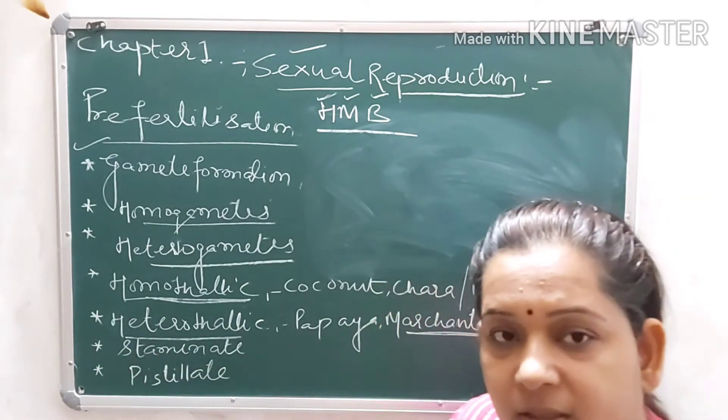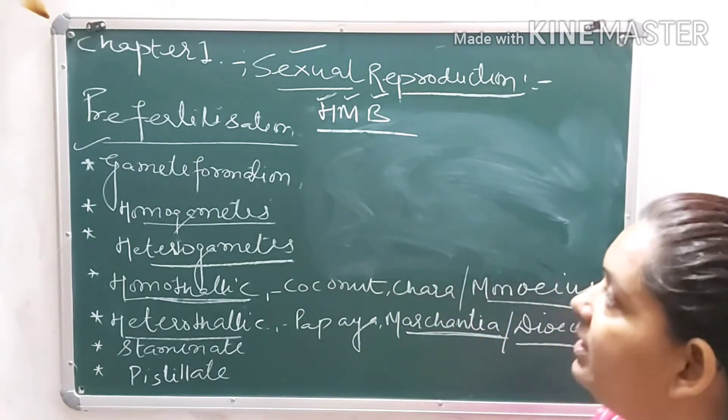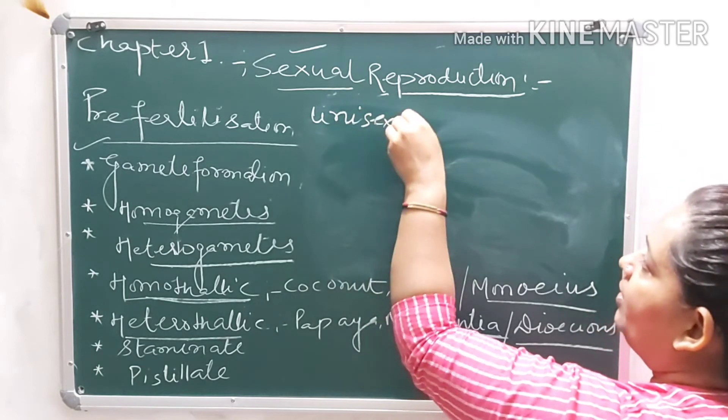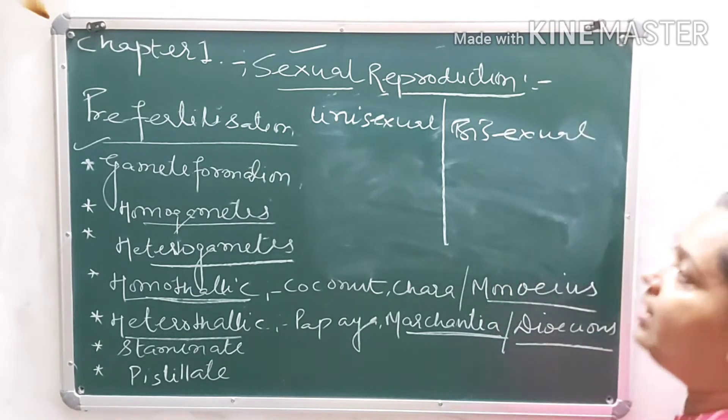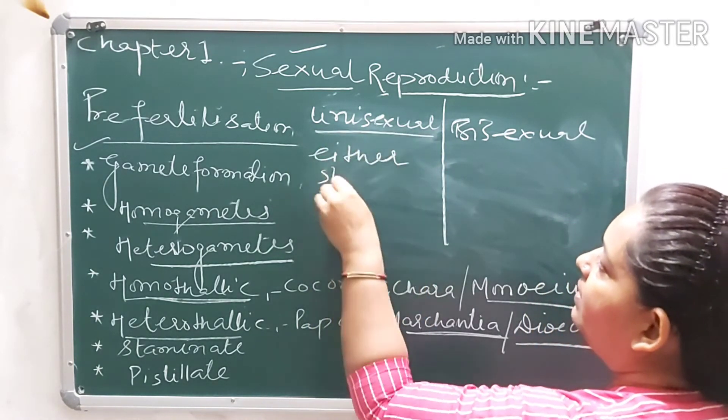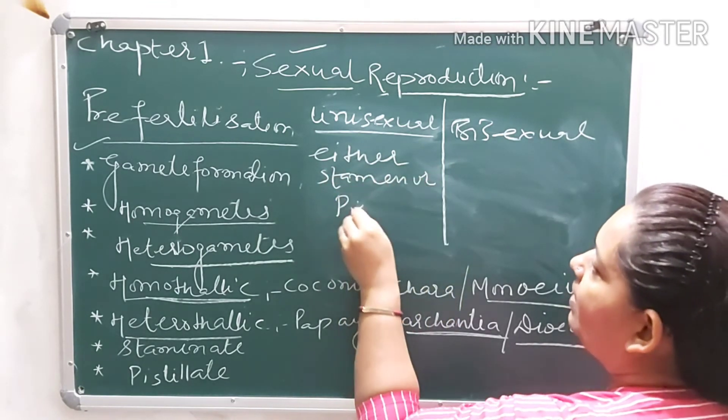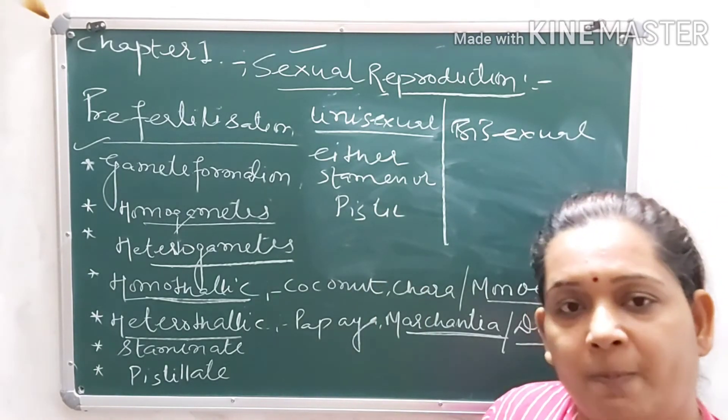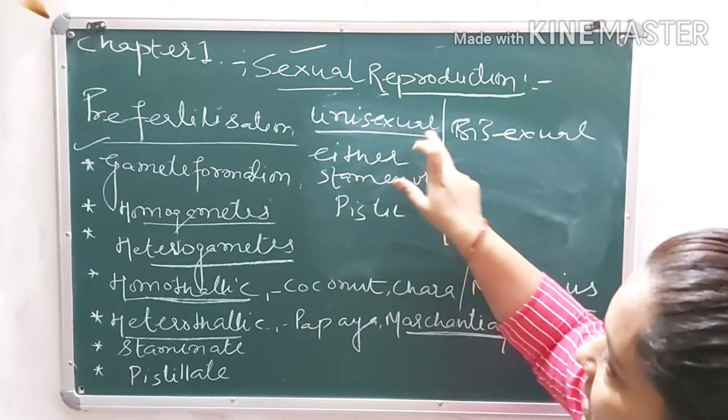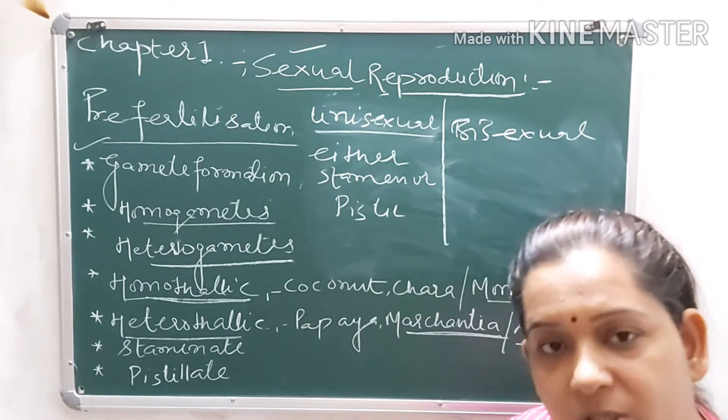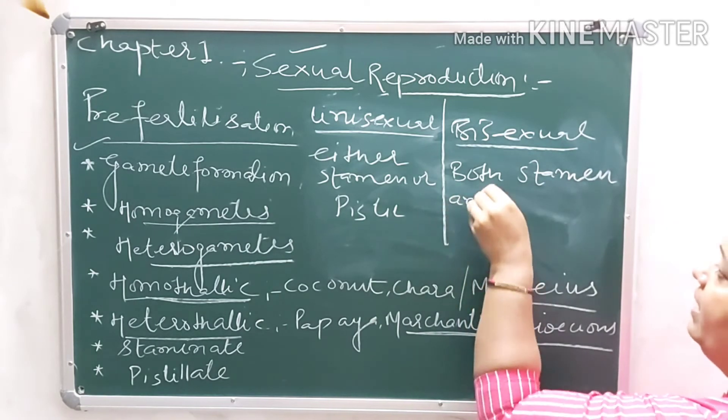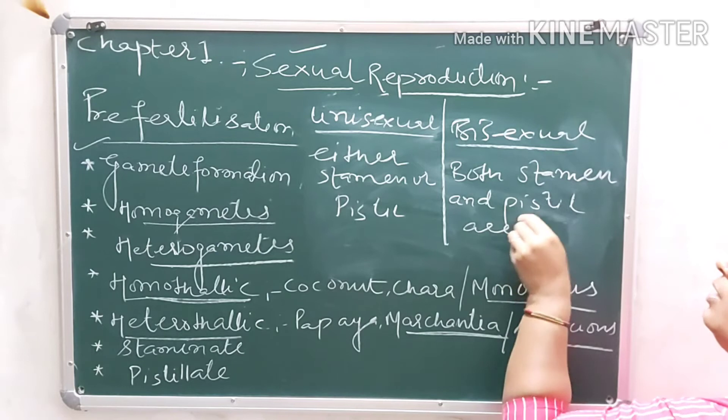Now we move to next topic, types of flowers. There are two types: unisexual flower and bisexual flower. Uni means single, bi means two. Unisexual flower means either stamen or pistil, either male reproductive part or female reproductive part. But bisexual flower has both stamen and pistil present.